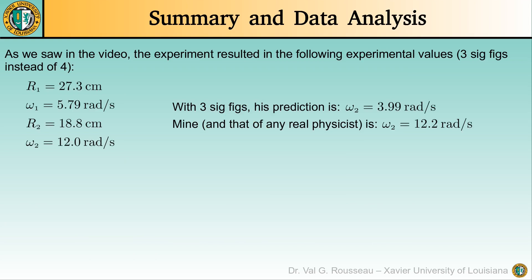So, let us summarize what we have. Our initial radius was 27.3 centimeters and our initial angular velocity was 5.79 radians per second. Our final radius was 18.8 centimeters and our final angular velocity was 12 radians per second. Now, remember his predicted value for the final angular velocity, which with three significant figures is 3.99 radians per second, and mine which is 12.2 radians per second.